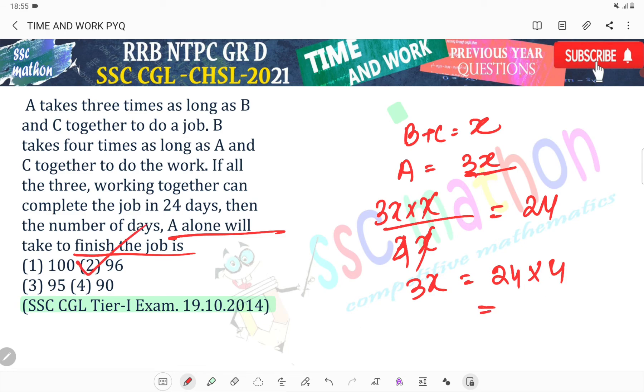So 3X times X divided by 3X plus X means 4X.